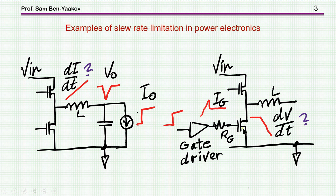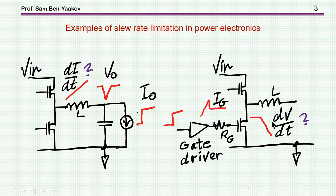Another example is a half-bridge inverter. We have a lower transistor and we are turning it on. There is a current going into the gate and consequently the drain-to-source voltage will start going down. This rate of change depends on the current fed to the gate, and there is a limitation on that current, and consequently a limitation on the rate at which dV/dt is changing.